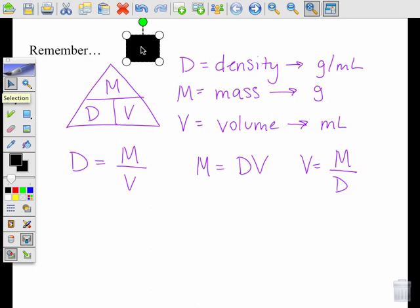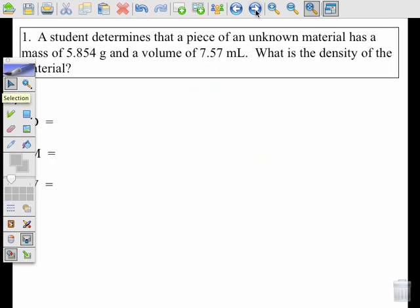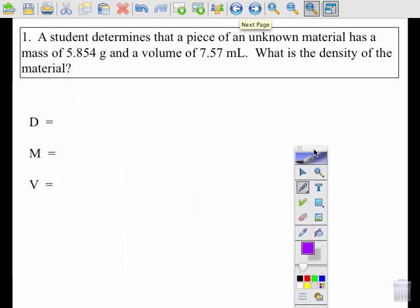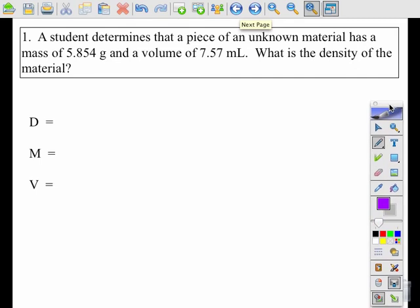So let's get started doing some practice problems. The first one we're going to do is number one. Remember that we're going to underline things that we are given, and we are going to circle what we are looking for. We are also going to write on this left-hand side our nodes, we call them.